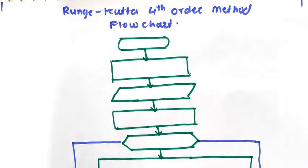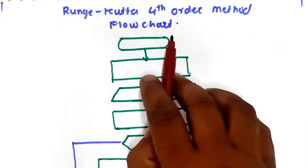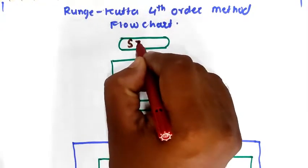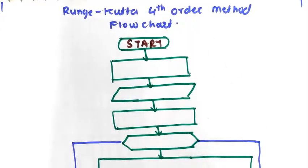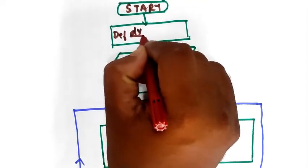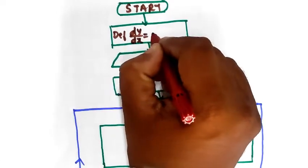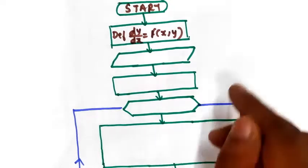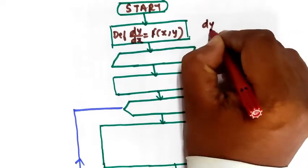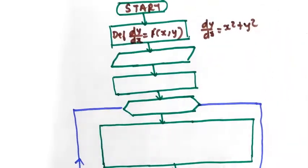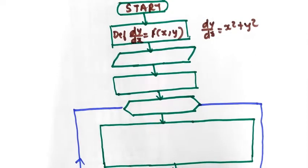Hello everyone. In this video we are going to see the RK fourth-order method flowchart. Starting with the flowchart, the next step is to enter the given function, that is the function defined as dy/dx which is equal to f(x, y). For example, dy/dx equal to x squared plus y squared. You have to enter the given function in this manner.